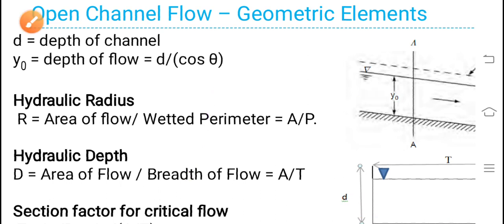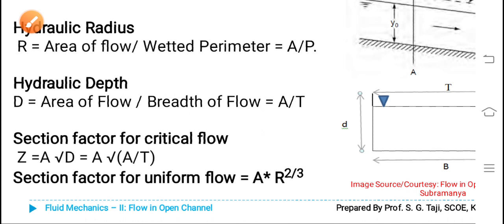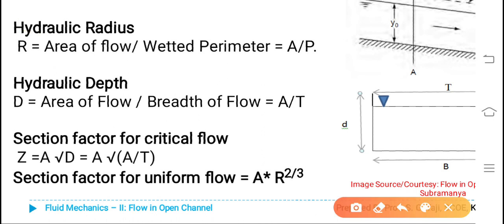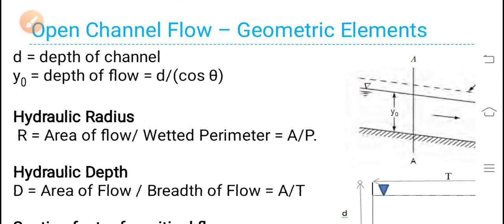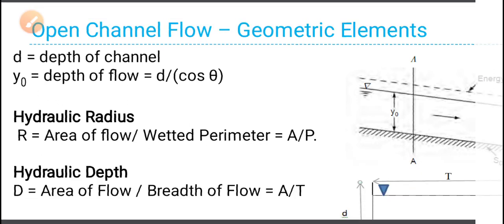Section factor for critical flow Z is equal to area multiplied by the square root of hydraulic depth, that is capital A multiplied by square root of capital A upon capital T. Section factor for uniform flow is equal to area multiplied by hydraulic radius to the power of 2/3, that is AR to the power of 2/3. Hydraulic radius is the ratio of area of flow divided by wetted perimeter, that is A by P.